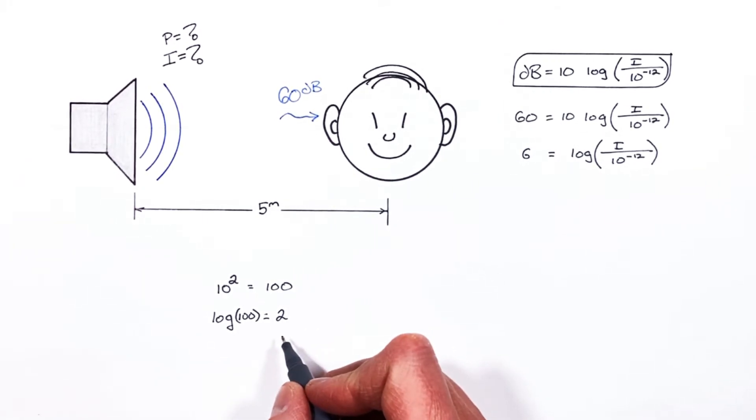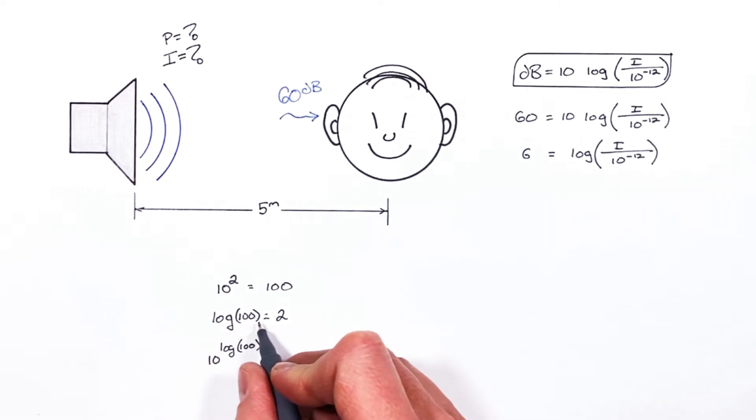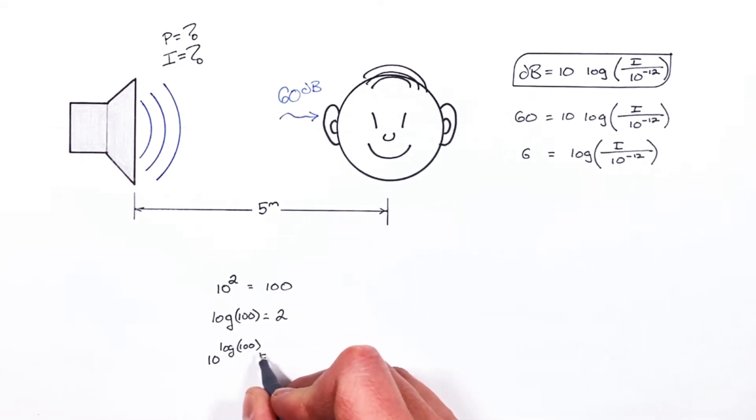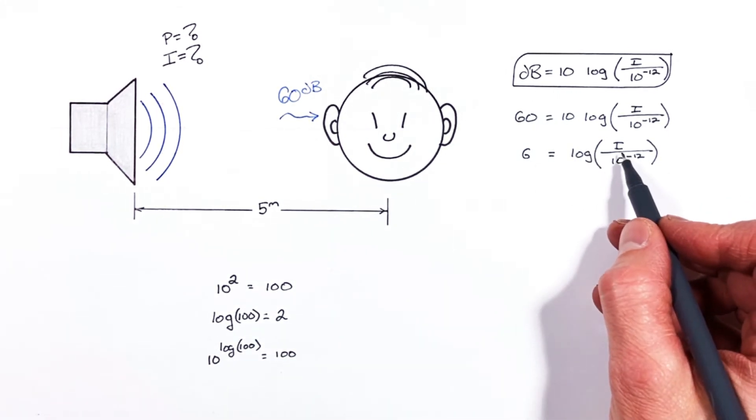Now there's one important piece to realize here and that is that if we were to take 10 to the log of 100, we know the log of 100 is 2 and 10 to the 2 is 100. So 10 to the log 100 is in fact 100. And this is going to be important in solving back up here for our intensity and I'll show you why.